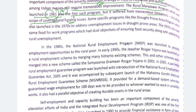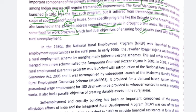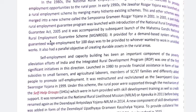Another specific program was the Drought Prone Area Program, introduced in the 1970s, to address fragile areas that faced severe drought conditions every year and to tackle unemployment in these areas. The 1970s also saw Food for Work programs, which had dual objectives: food security and addressing rural unemployment.